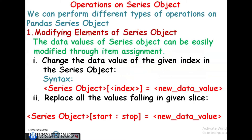Operations on series object. We can perform different types of operations on a pandas series object. Six different types of operations are there. First one: modifying elements of series object. Second one: the head and tail functions. Third one: vector operations on series object.